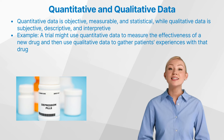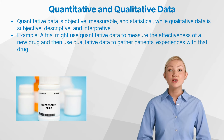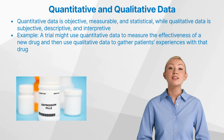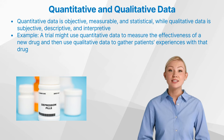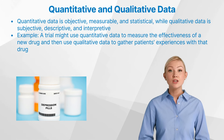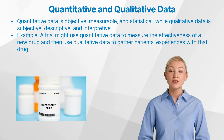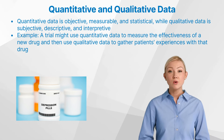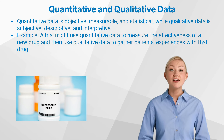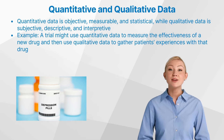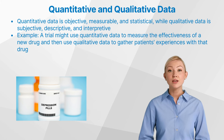Consider a clinical trial evaluating the efficacy of a new antidepressant. The quantitative aspects of the trial might measure the improvement in symptoms using standardized scales such as the Hamilton Depression Rating Scale or the Beck Depression Inventory. These scales provide numerical data that can be analyzed to determine if the antidepressant statistically significantly improves depression symptoms compared to a placebo.